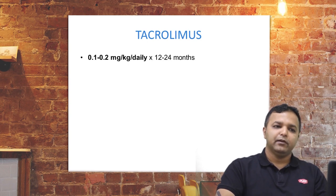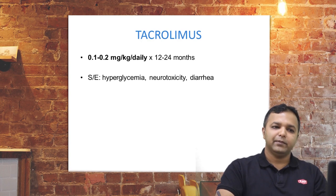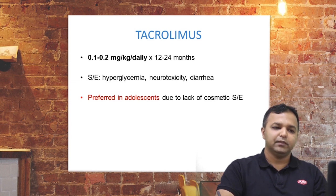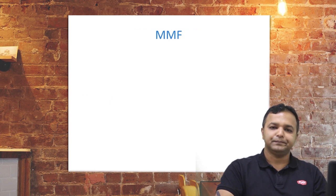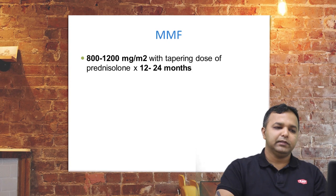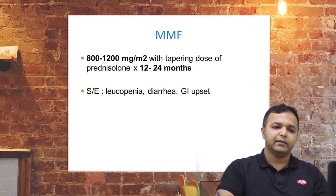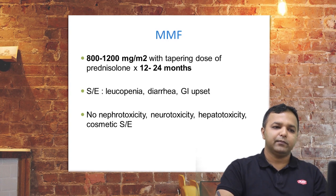Tacrolimus is available in capsule form at a dose of 0.1 to 0.2 mg/kg/day for 12 to 24 months. Common side effects are hyperglycemia, neurotoxicity, and diarrhea. It is preferred in adolescents due to very low cosmetic side effects, though glucose and creatinine must be monitored every 2 to 3 months. Mycophenolate mofetil (MMF) is dosed at 800 to 1200 mg/m²/day with tapering steroids for 12 to 24 months. Common side effects are gastrointestinal — GI upset and diarrhea — with no nephrotoxicity, neurotoxicity, hepatotoxicity, or cosmetic side effects. TLC should be monitored every 2 months.